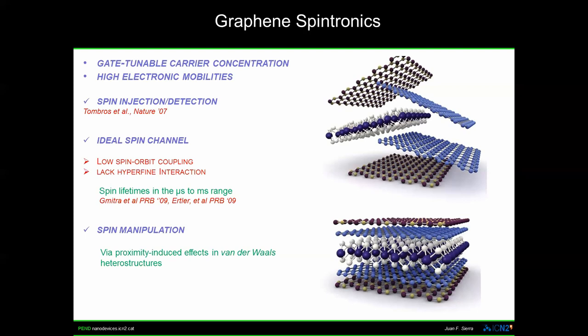Spin manipulation can be realized via proximity-induced effects. When you stack graphene with other two-dimensional materials, you can engineer van der Waals heterostructures in which, by stacking different materials, you can combine their properties. I will focus today on bilayer heterostructures of graphene with high spin-orbit coupling transition metal dichalcogenides.